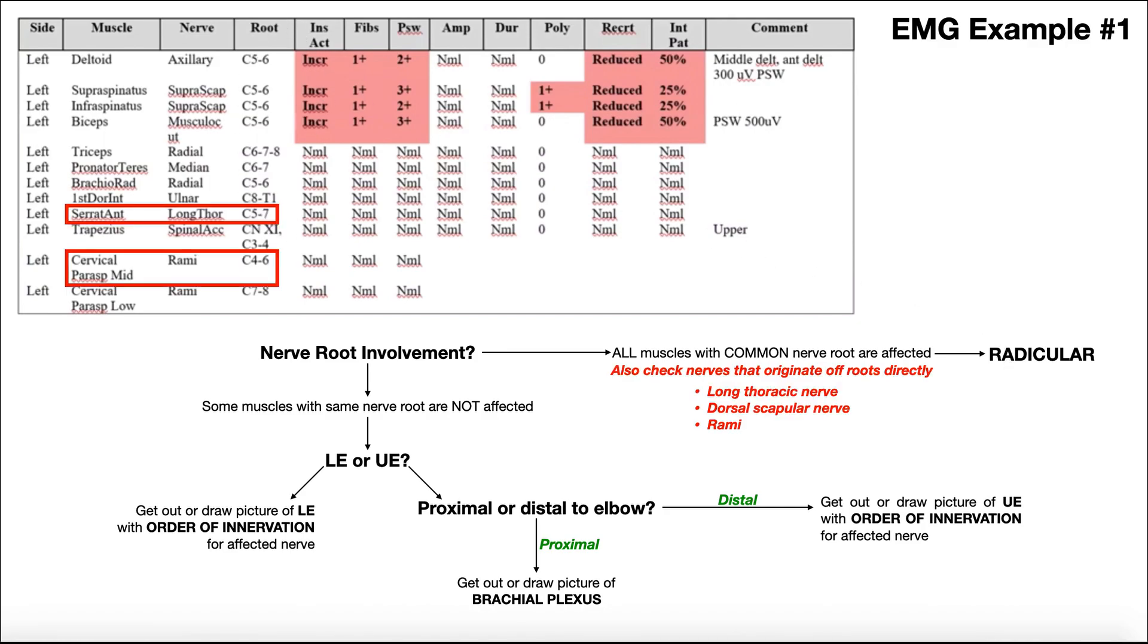Now, before we completely rule out radiculopathy as the cause here, we need to do one more thing, and that's to check the nerves that originate off of the nerve roots directly. And I'll show you this on the brachial plexus, but understand that you don't necessarily need to draw that every single time for this.